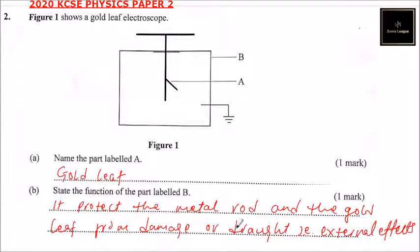So that is the answer. It is used to protect the metal rod and the gold leaf from external effects. So that's how you answer question number two.